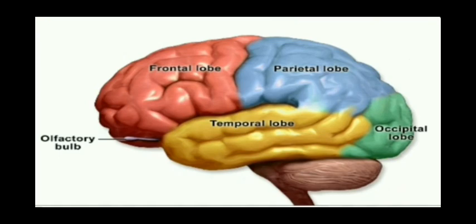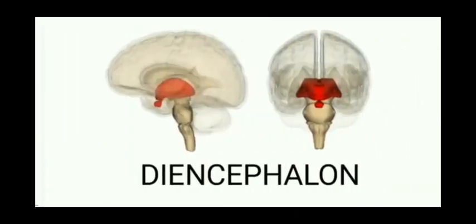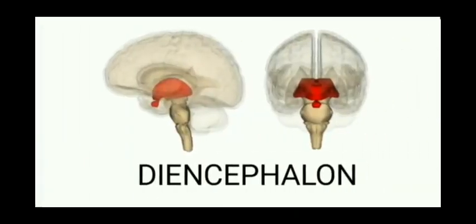Next, the last lobe is the Occipital lobe. This is major — it is related to vision. Now, this is the Telencephalon with the Cerebral Cortex. Diencephalon contains the Thalamus and Hypothalamus.